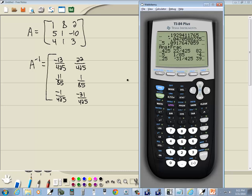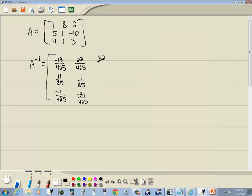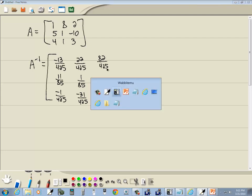And let me scroll over some more to get my last column. So I'm just pressing right arrow key to scroll over. And then we've got 82 over 425, and negative 4 over 85, and 39 over 425.